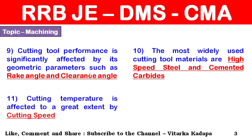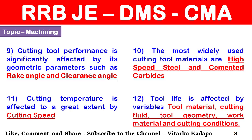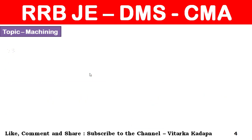The most widely used cutting tool materials are high speed steels and cemented carbides. Cutting temperature is affected to a great extent by cutting speed. Tool life is affected by the variables: tool material, cutting fluid, tool geometry, work material, and cutting conditions.